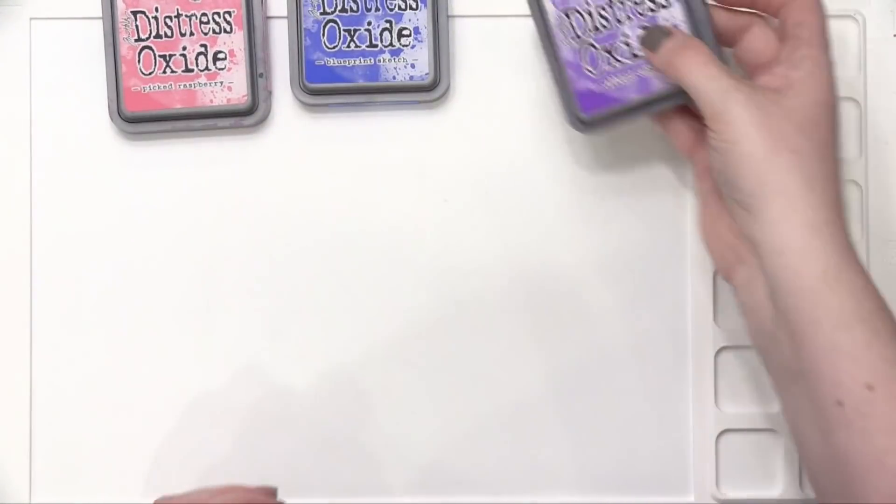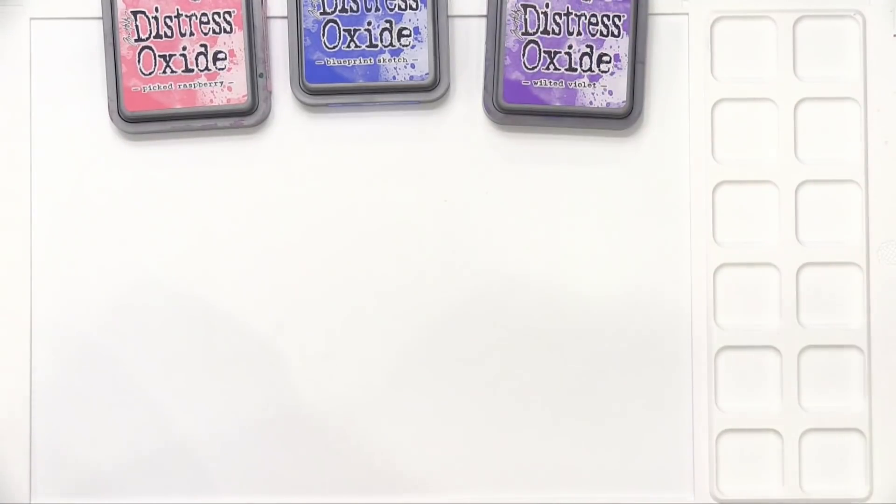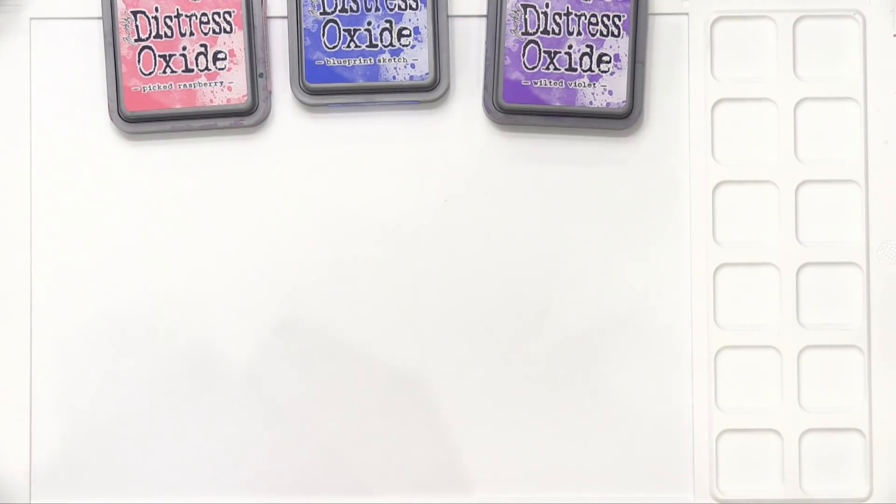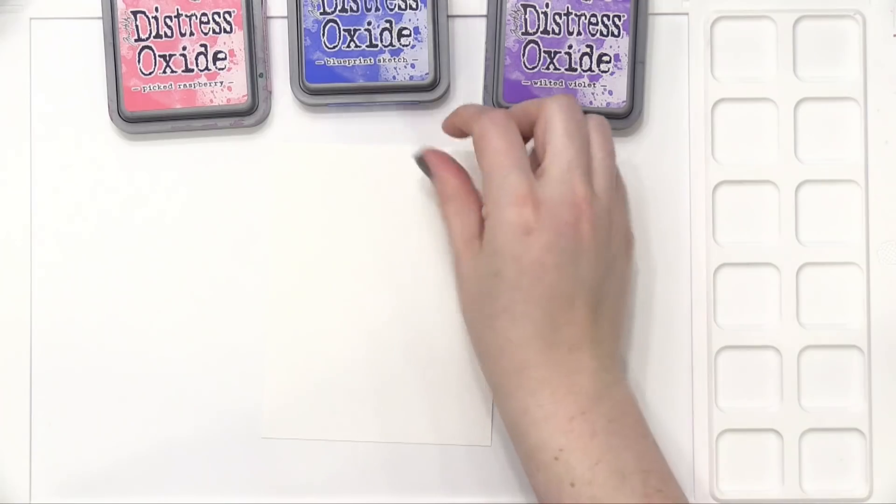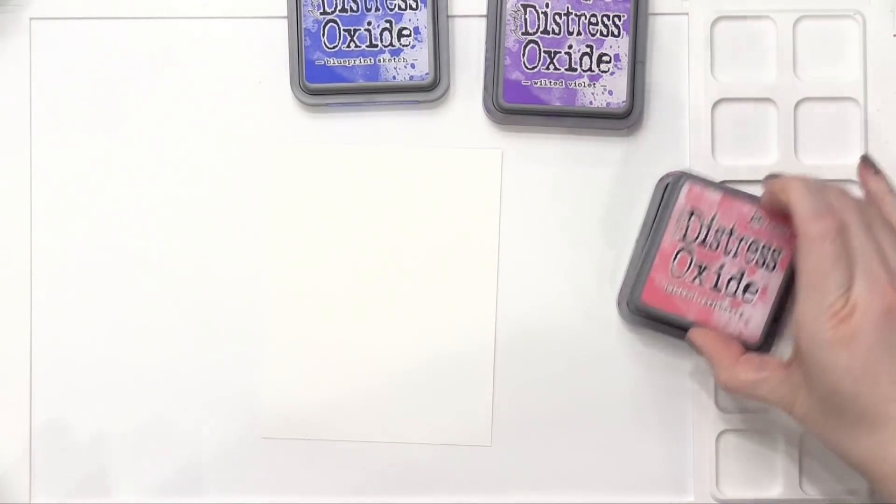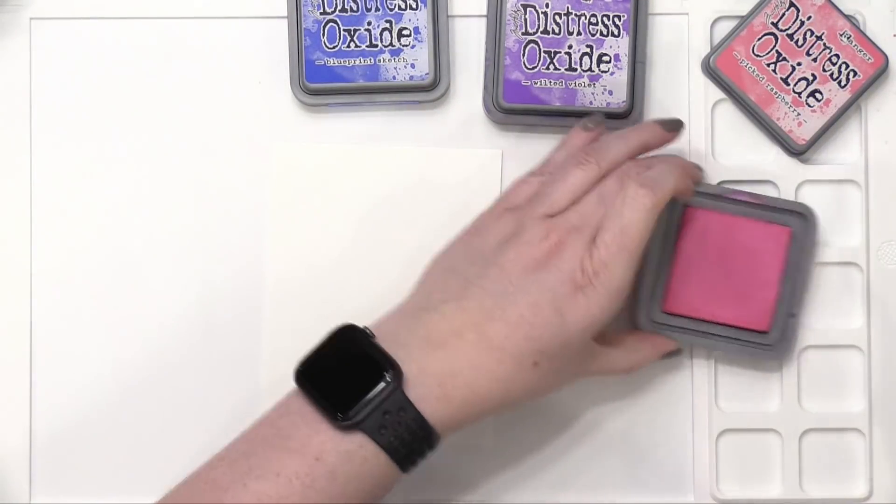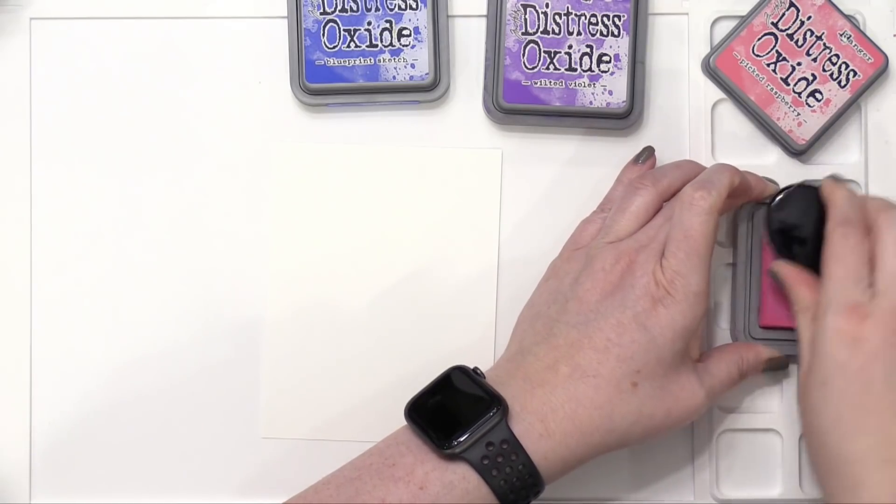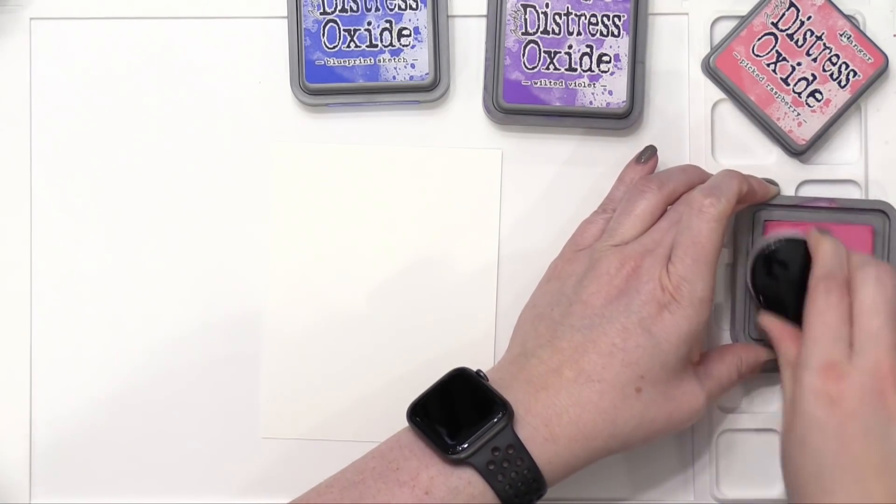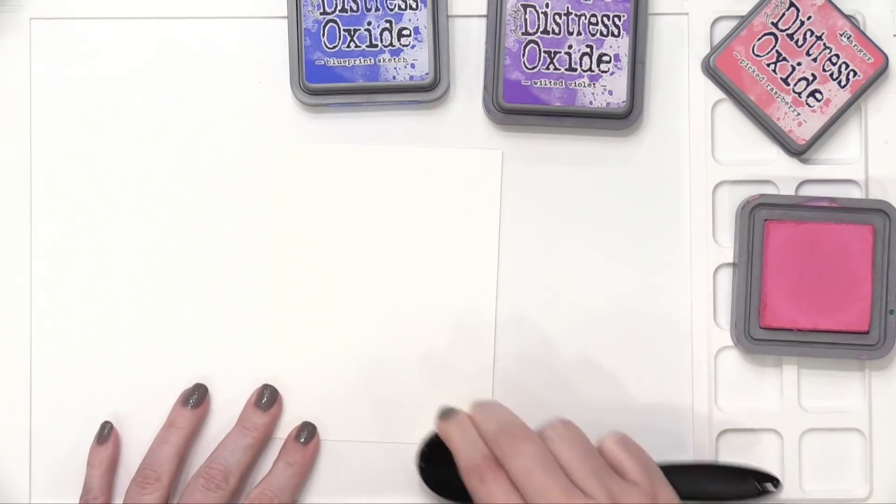I'm now going to do a bunch of ink blending. I'm going to be using at first just three colors of Distress Oxide ink. I've got Picked Raspberry, Blueprint Sketch, and Wilted Violet. I also have a piece of Neenah Classic Crest Solar White 80 pound cardstock and I'm going to be blending these inks using some blender brushes from Honey Bee.